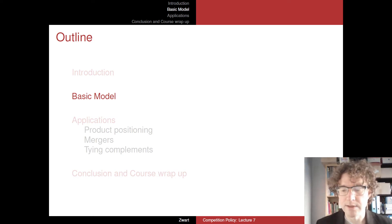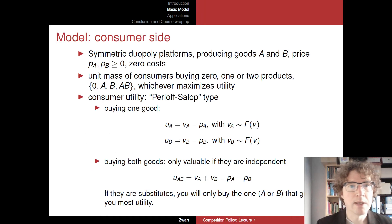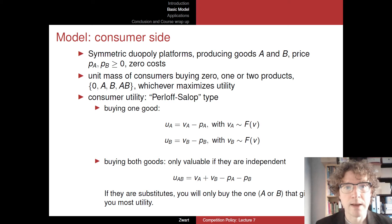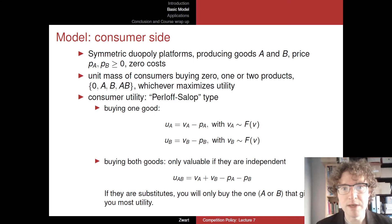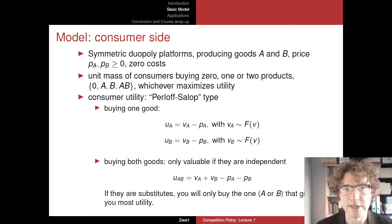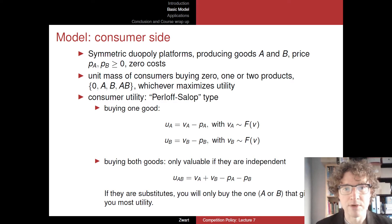Let's have a look at the model we're going to use. The model has a consumer side, described by two platforms — take these to be symmetric, a duopoly of platforms. The first platform produces good A, so we'll call it platform A, and platform B produces good B. They charge prices, and we assume these prices cannot be negative, so you cannot be paid for consuming goods from these platforms, which in reality is often a realistic assumption.